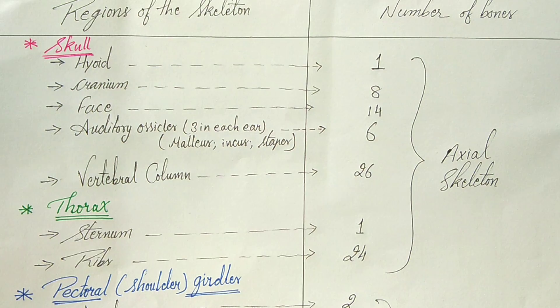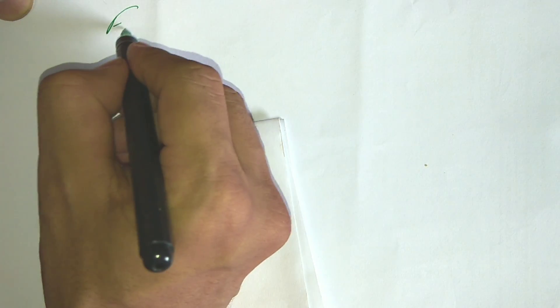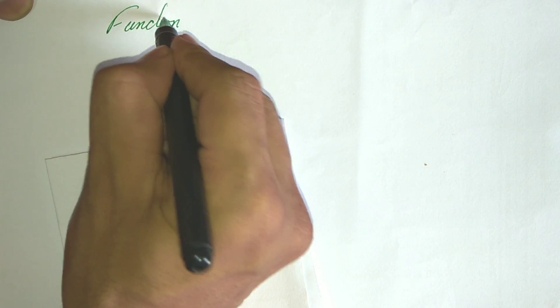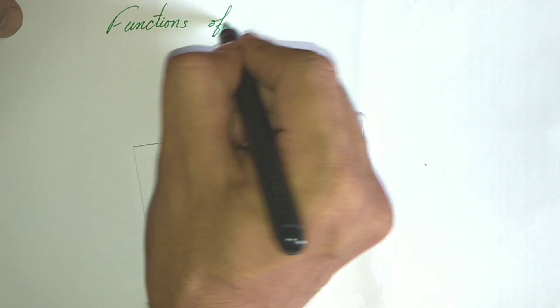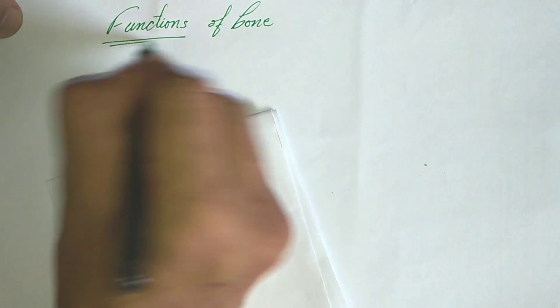And the axial skeleton, as you know, is skull and thorax. Now come to the function of bones. What are the functions of bone?